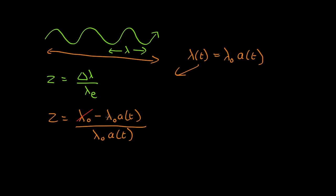So all the lambda_0s cancel, and we find that the redshift is equal to (1 minus a(t)) divided by a(t).